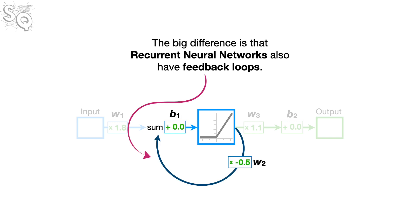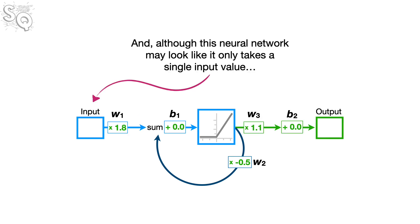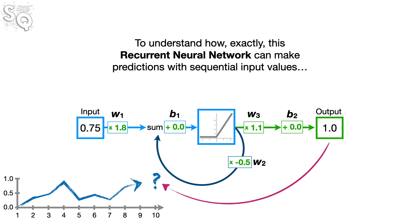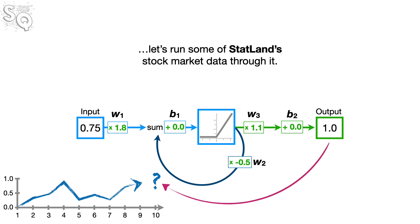The big difference is that recurrent neural networks also have feedback loops. And, although this neural network may look like it only takes a single input value, the feedback loop makes it possible to use sequential input values, like stock market prices collected over time, to make predictions. To understand how, exactly, this recurrent neural network can make predictions with sequential input values, let's run some of StatLand's stock market data through it.